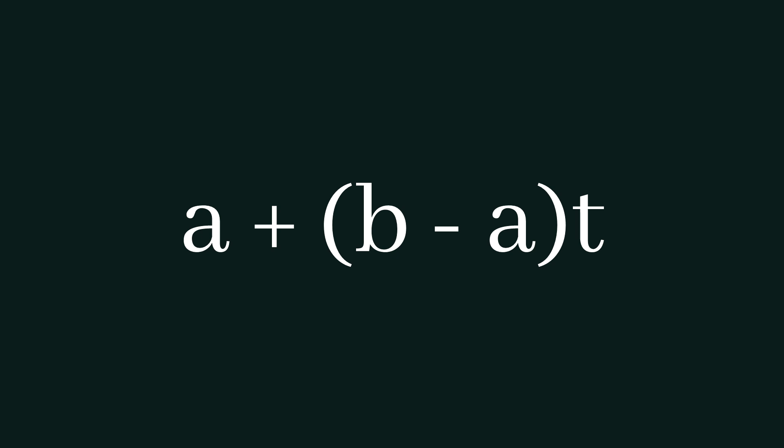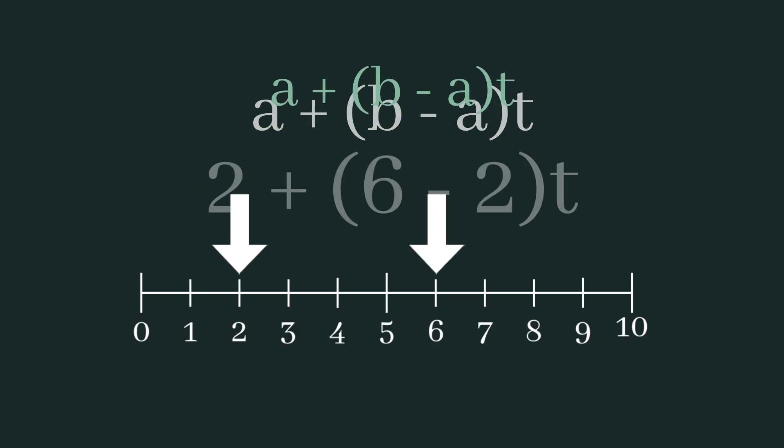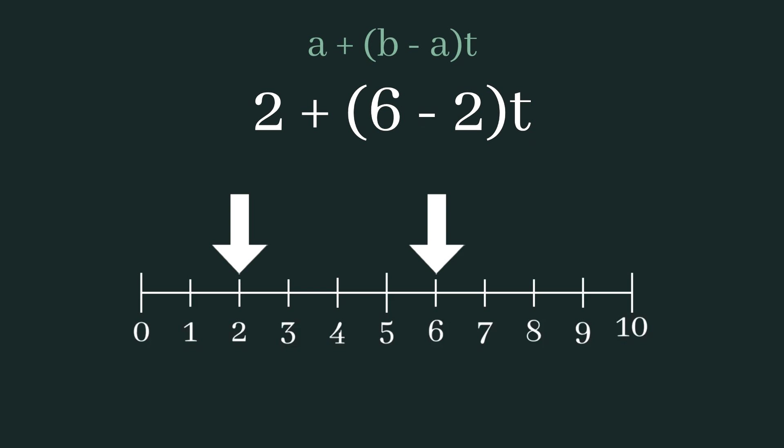As I mentioned earlier, mathf.lerp is a one-dimensional lerp, so we can visualise this as a number line. Let's arbitrarily choose 2 and 6 as the start and end values, and let's say that we supply a percentage of 0.5. We know the result of the lerp will be 4, but let's step through how this works.